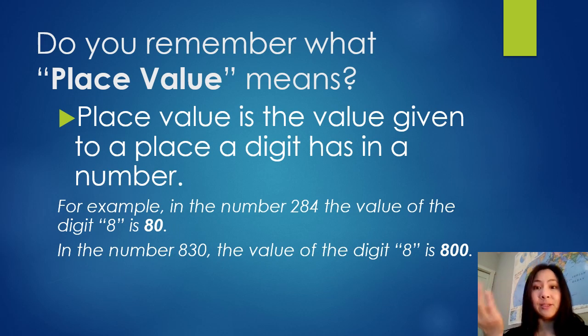So first of all, let's make sure we understand and remember what place value means. You can read right here on the slide. Place value is the value given to a place a digit has in a number. So maybe this example makes more sense. If you had the number 284, and we're looking at just the digit eight, in that number, since the eight is in the tens place, the value of the eight is 80. Is this sounding familiar? Okay, but that same digit eight has a different value in the number 830. In this case, the value of the digit eight is 800.